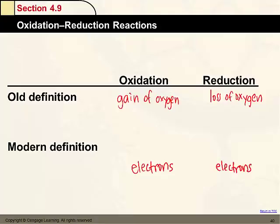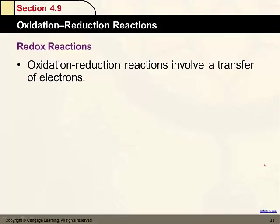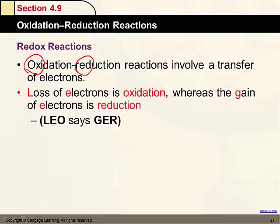In the modern definition, oxidation is the loss of electrons and reduction is the gain of electrons. This can be tricky because we might think reduction would involve losing something, but the name was based on the loss of oxygen rather than the gain of electrons. Oxidation and reduction always involve a transfer of electrons — we get 'redox' from OX in oxidation and RED in reduction. A convenient acronym: LEO (Loss of Electrons is Oxidation) and GER (Gain of Electrons is Reduction).